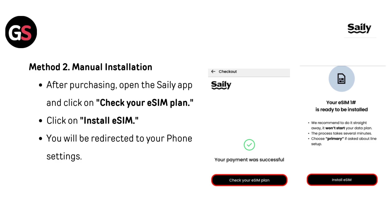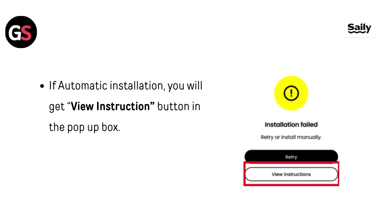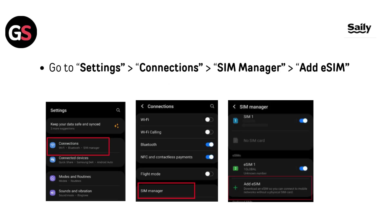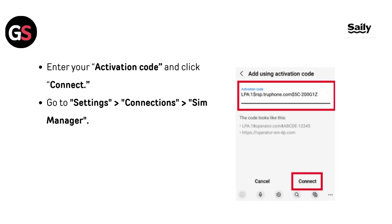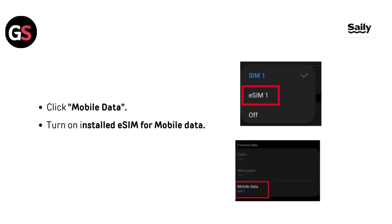Android Method 2: Manual Installation. After purchasing, open the Selly app, click on Check Your eSIM Plan, then click Install eSIM. You will be redirected to your phone settings. If automatic installation fails, you will get a View Instructions button in the pop-up box. Go to Settings, then Connection, then SIM Manager, then Add eSIM. Click Scan QR Code from the service provider, then click Enter Activation Code at the bottom of the screen. Enter your activation code and click Connect. Then go to Settings, Connection, SIM Manager, and click Mobile Data. Turn on the installed eSIM for mobile data.